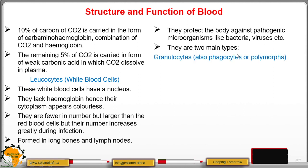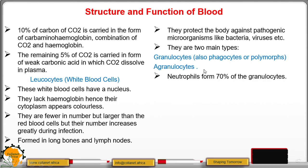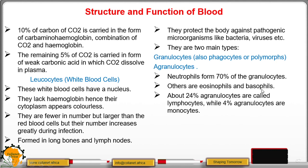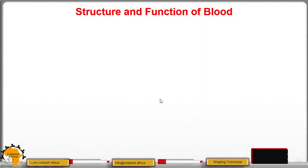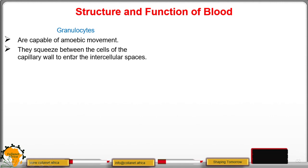There are two main types: granulocytes, also called phagocytes, and agranulocytes. Among granulocytes, neutrophils form about 70 percent. There are also eosinophils and basophils. About 24 percent of agranulocytes are lymphocytes and 4 percent are monocytes. Granulocytes have amoeboid movement, allowing them to squeeze between cells of the capillary wall to enter intercellular spaces.